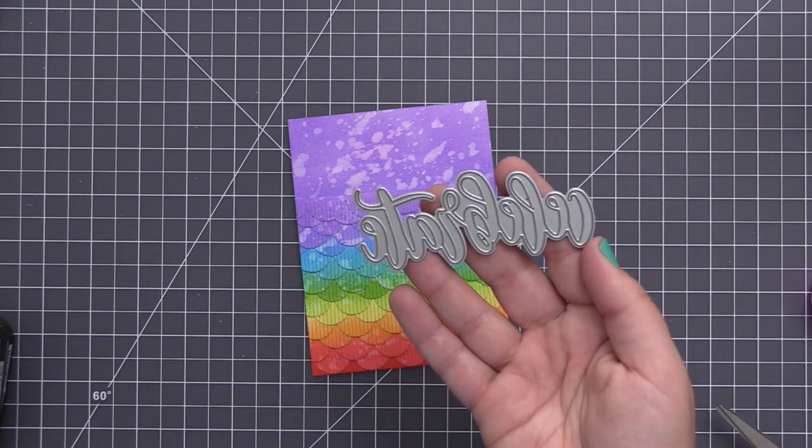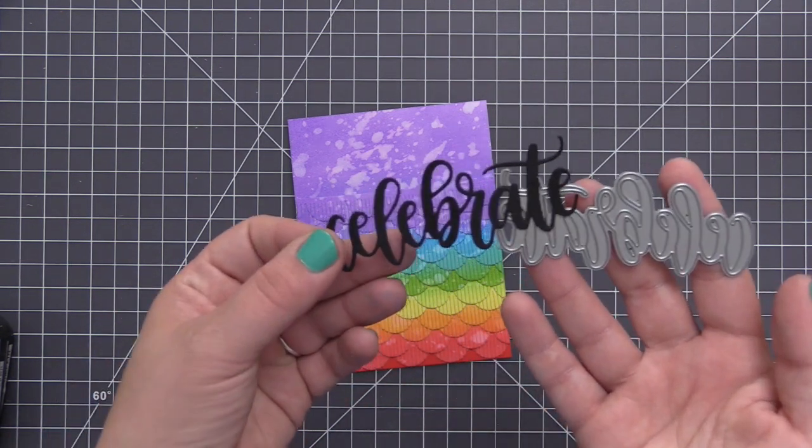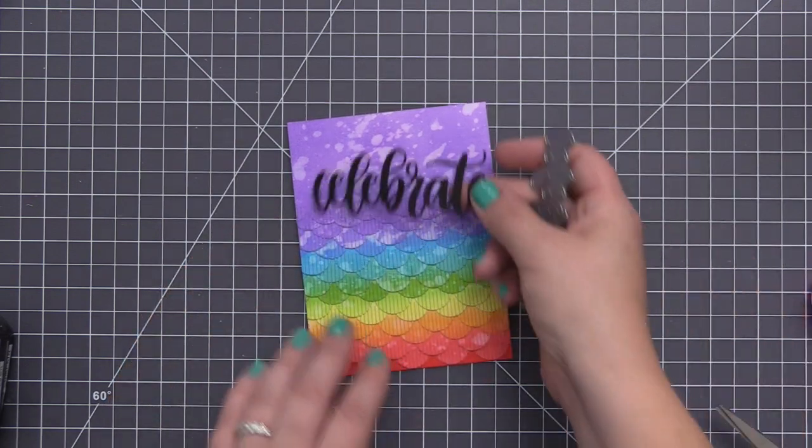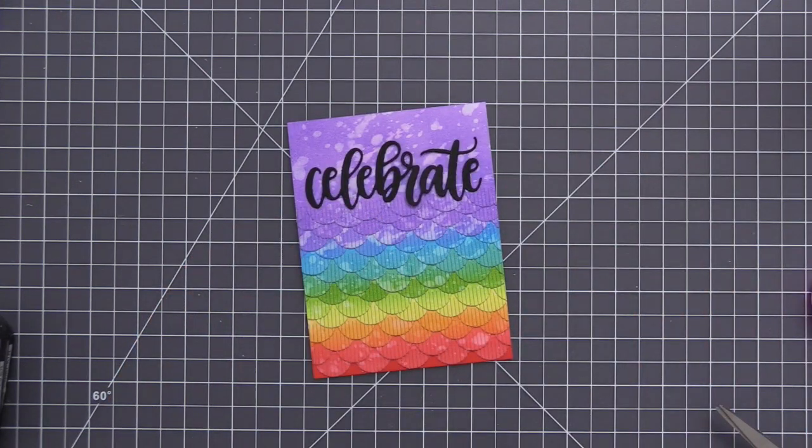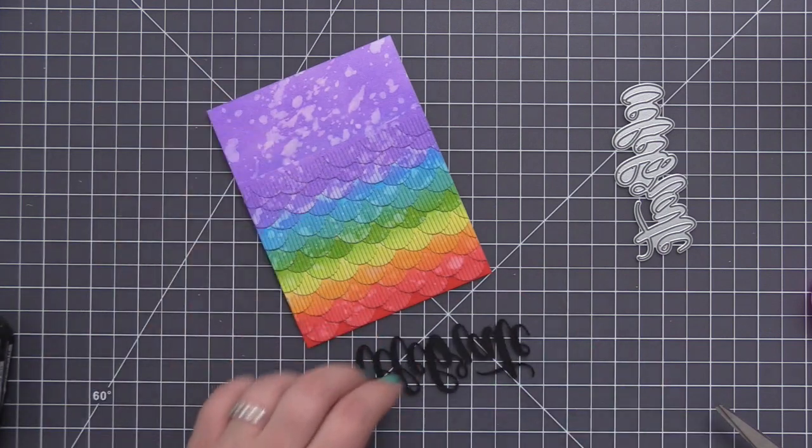So for the sentiment we're going to use the new Celebrate Dynamics die. This is a handwritten type font die and I absolutely love it. It's big, it's bold, it looks so nice especially with a card like this where we have a lot of color.